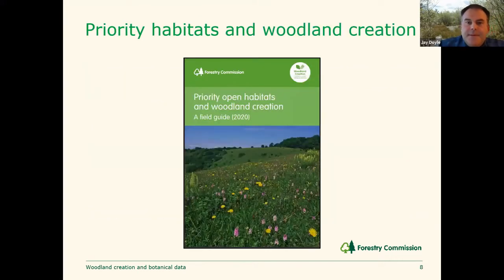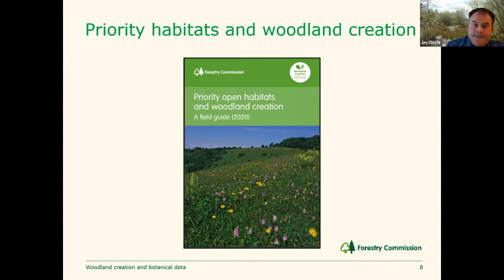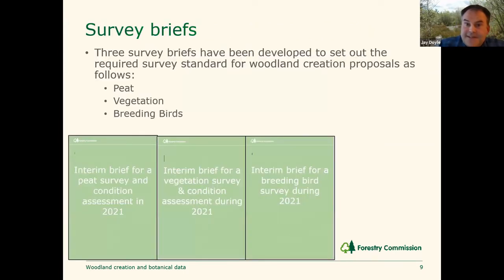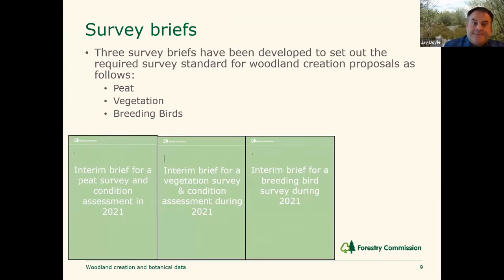To continue the work set out within Operations Note 43, last year we developed a field guide: Priority Open Habitats and Woodland Creation. It's intended to support the sustainable creation of woodland and avoid impact on priority open habitats. To further support the consideration of suitability of sites for woodland creation, last spring we developed three interim briefs — all interlinked — focusing on peat, vegetation, and breeding birds. That's been trialled this summer and we'll be refining it over the course of the autumn ahead of next year's survey season, effectively setting up a standard for how we assess sites.